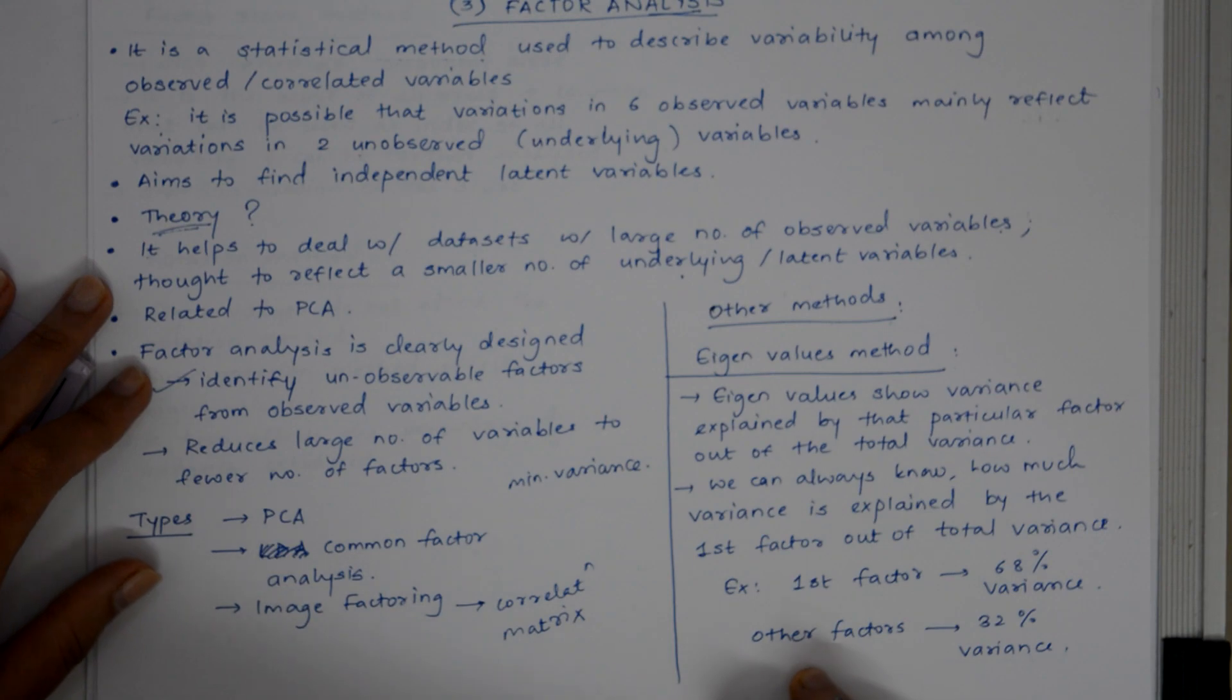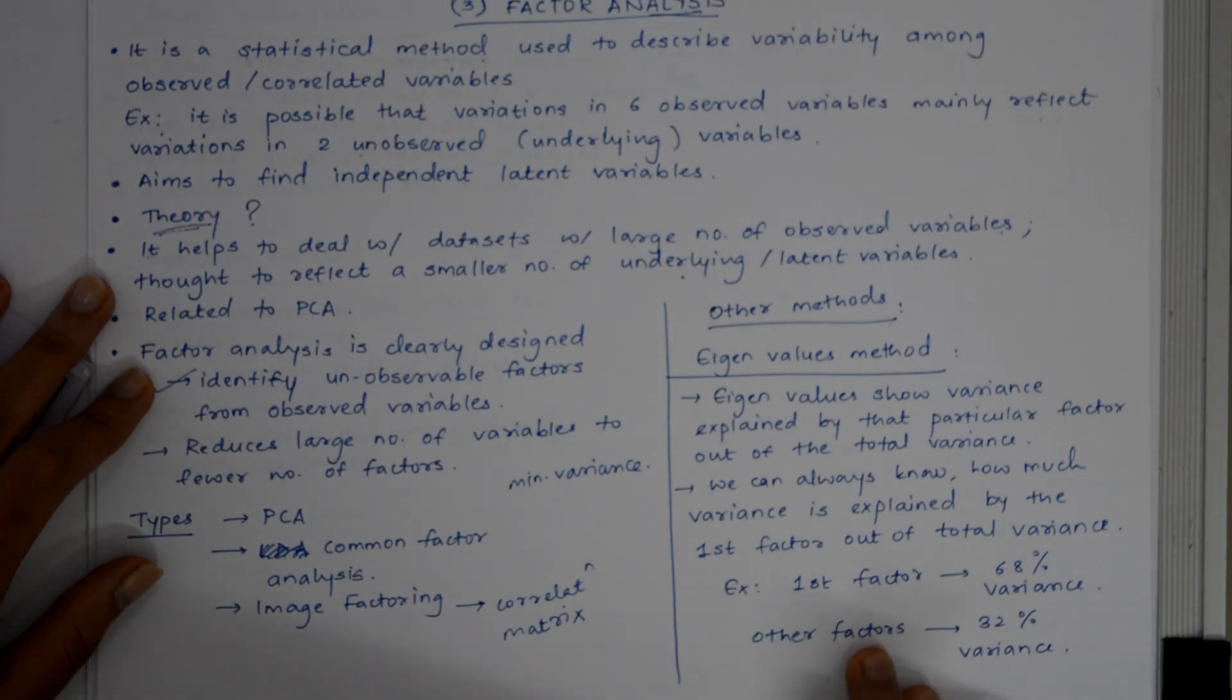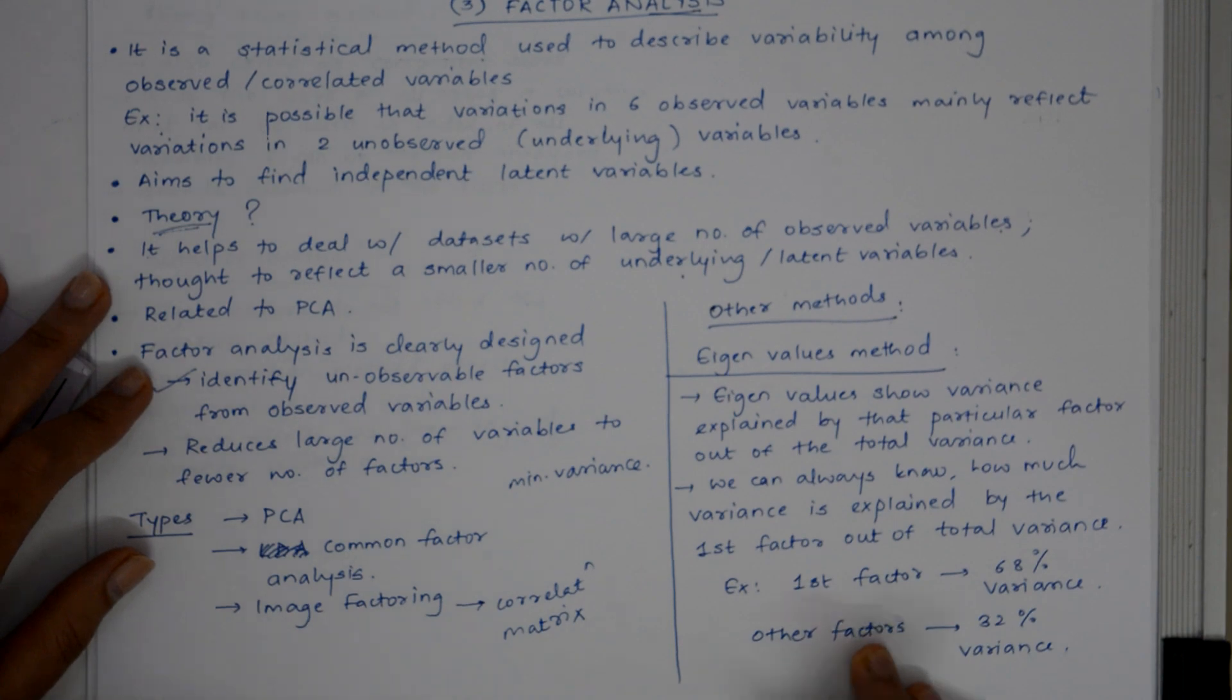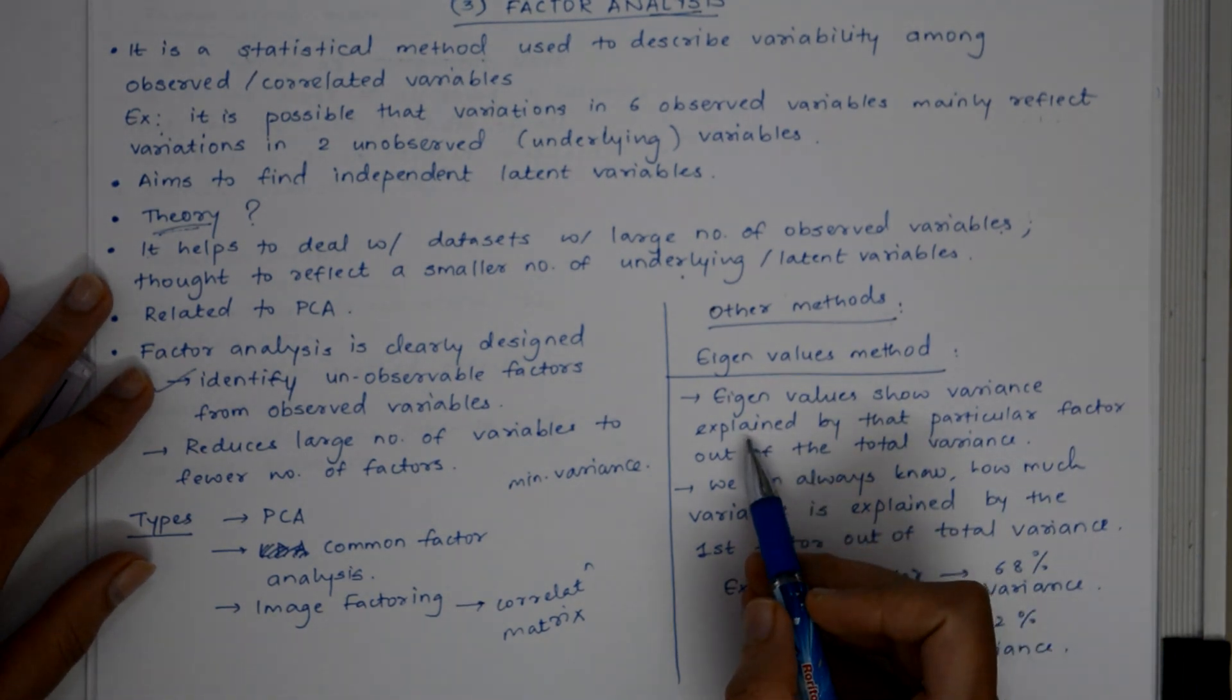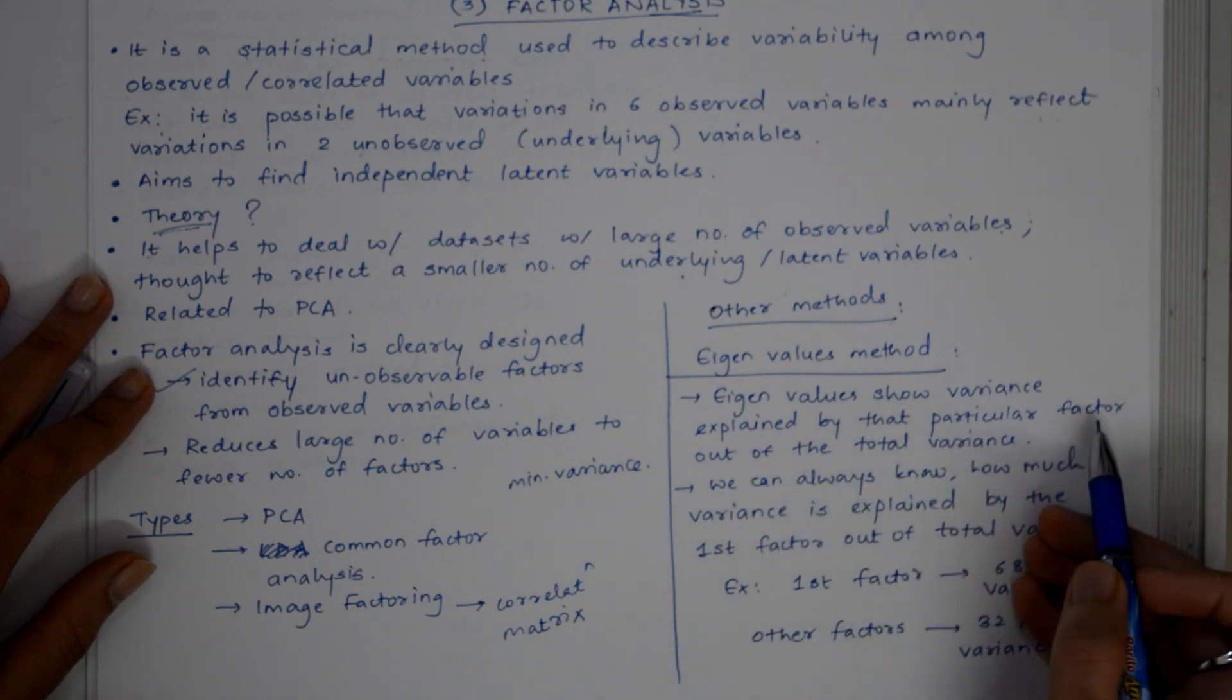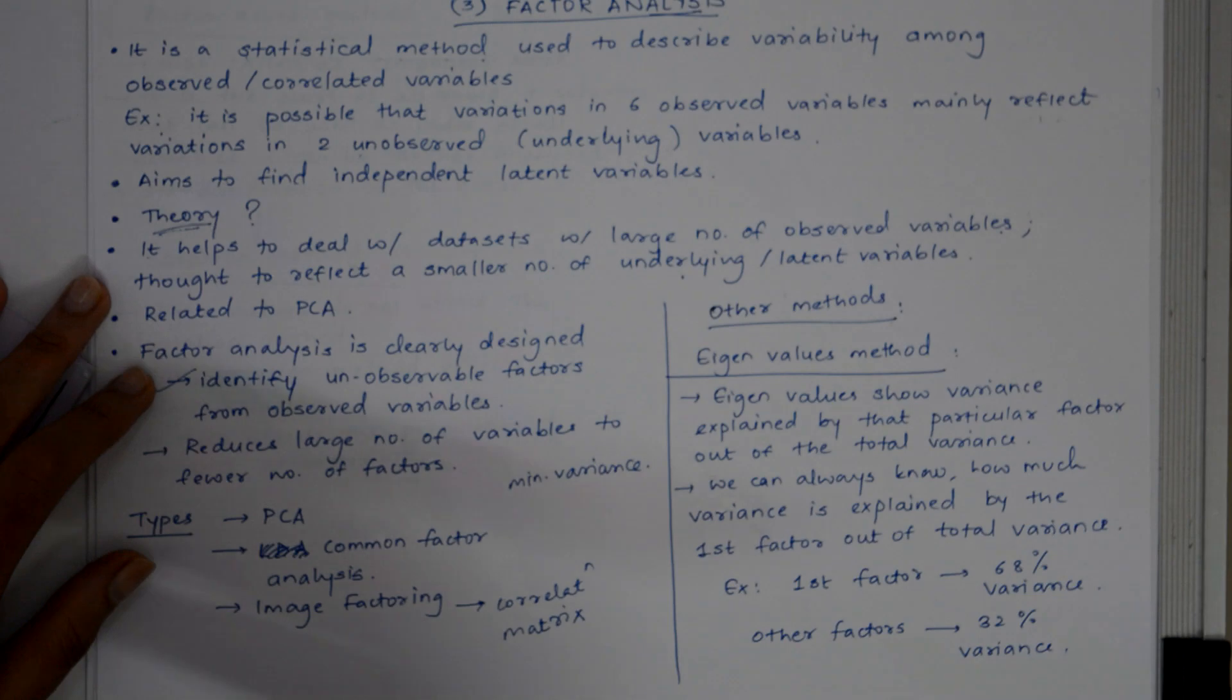OLS regression method is used to predict the factor in image factoring. There is also another method, the eigenvalues method. Eigenvalues show variance explained by that particular factor out of the total variance.